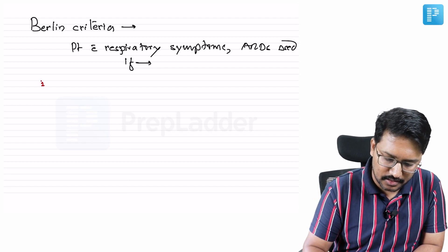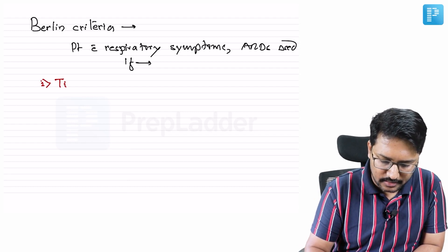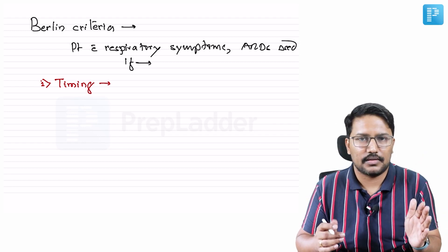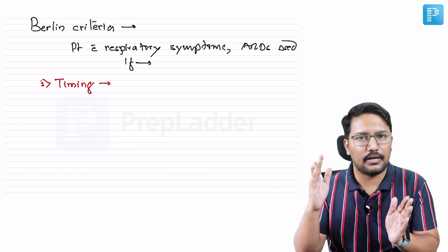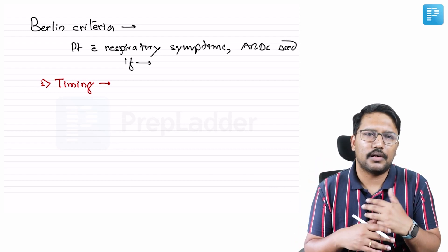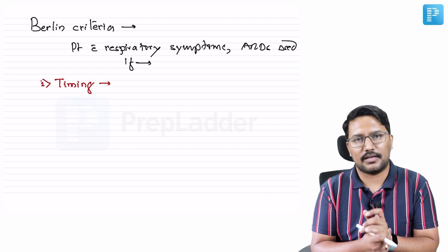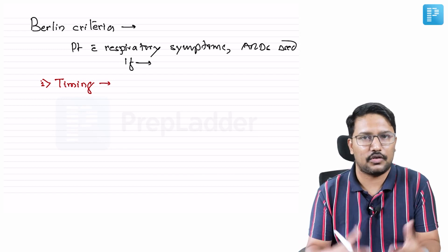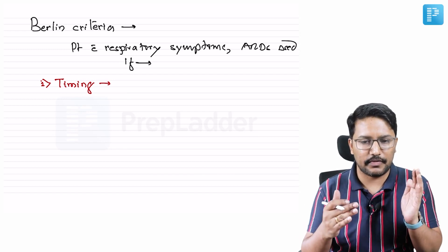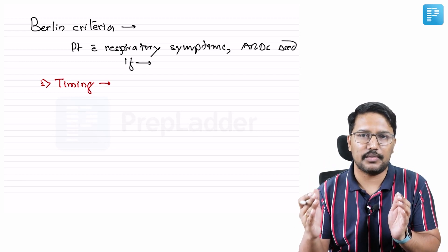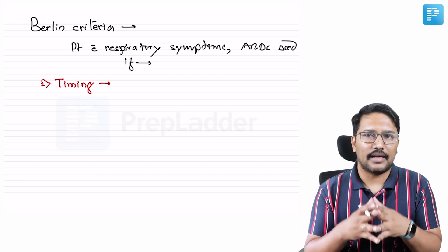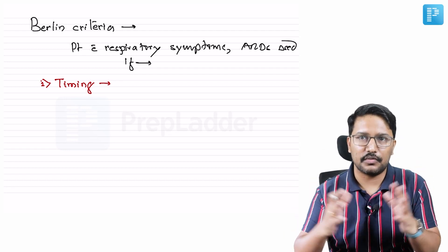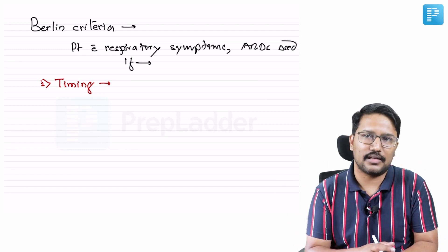Criteria number one: timing. This is very, very important. For example, if a patient develops sepsis and that leads to ARDS, or a patient has a massive road traffic accident with crushing of tissues, rhabdomyolysis, and develops ARDS — there should be a temporal relation between the inciting event and the patient developing respiratory symptoms. This temporal relation is defined as less than seven days. If the inciting event and respiratory symptoms are spaced out by more than seven days, you cannot consider ARDS in that case.